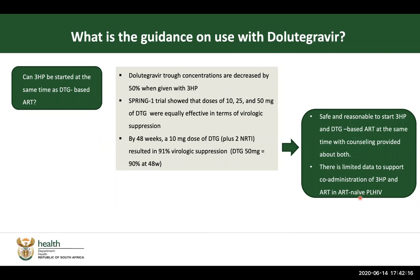The guidelines only allow the introduction of 3HP in patients who were already on ARVs and switched to DTG, not new patients. Someone who was on an efavirenz-based regimen and was switched to TLD as part of switching protocols — those patients, after counseling and support, can be provided with DTG and 3HP at the same time.